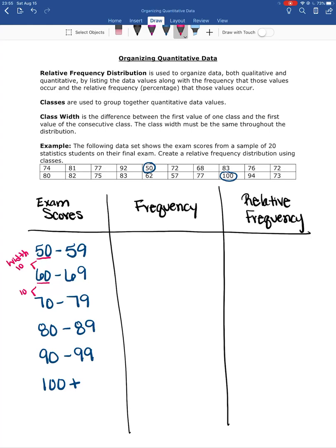I didn't randomly decide, oh, I'm going to go from 50 to 70 and then 70 to 80, 80 to 90, because then that would not be the same class width throughout.